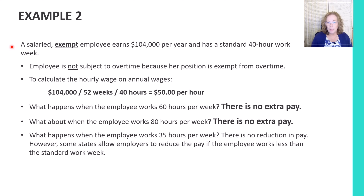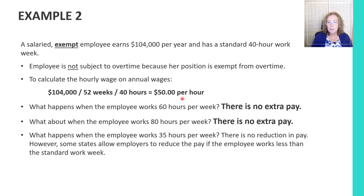Let's look at another example. We have an exempt employee who earns $104,000 per year and has a standard workweek of 40 hours. This employee is not eligible for overtime because they are exempt from the overtime provisions of the Fair Labor Standards Act. To calculate the hourly rate, we take the annual salary of $104,000 divided by 52 weeks and divided by 40 hours — because we were told this employee has a standard 40-hour workweek — resulting in $50 per hour.